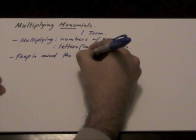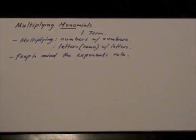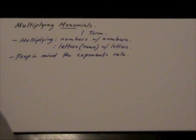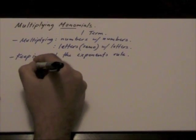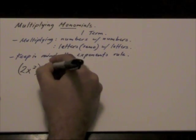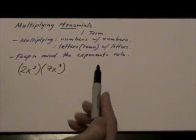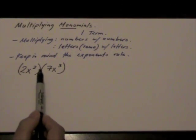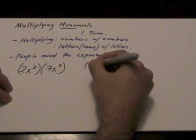The other thing to keep in mind when multiplying monomials is the exponents rule, and we're going to see that in just a second. So let's look at the first example here. We have 2x squared, and then another set of brackets, 7x cubed. Whenever we have brackets that are side by side like that, keep in mind that the function is multiplication.